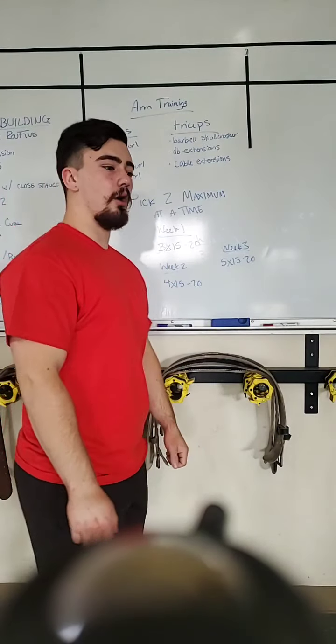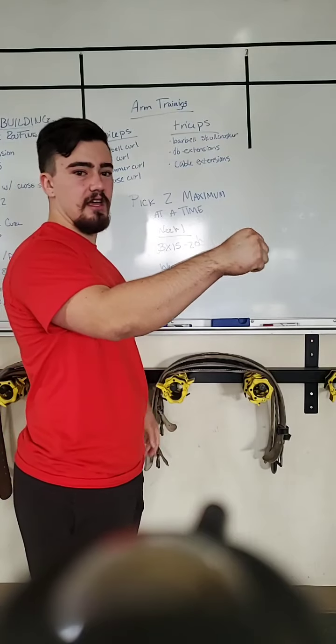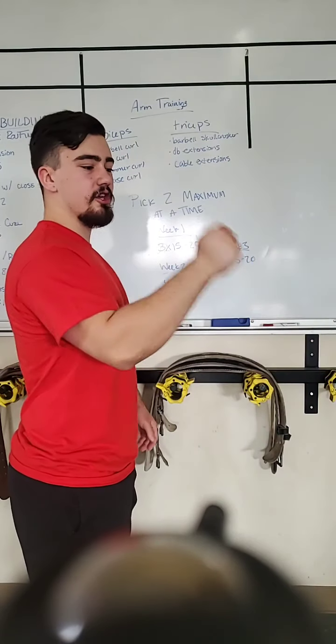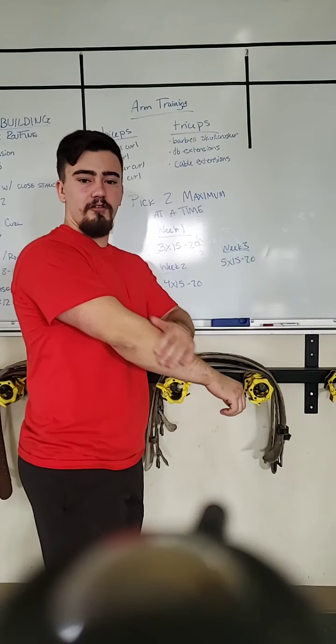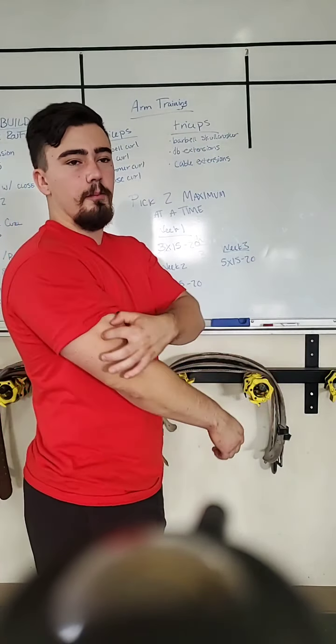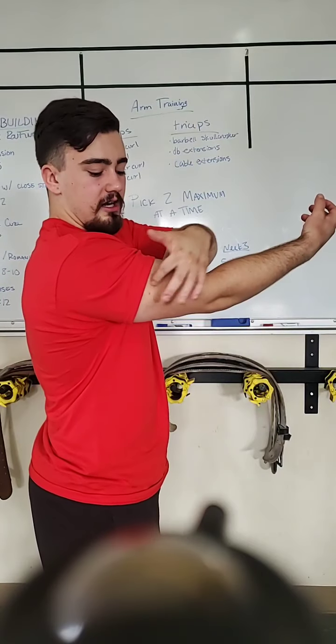Hammer curl. That's a dumbbell curl where your grip is sideways like this. You don't supinate your hand. You keep your hand in a neutral grip like this. Curl like this. This is very good for the forearms and the brachialis which is a muscle that lies between the bicep and the tricep up in here.